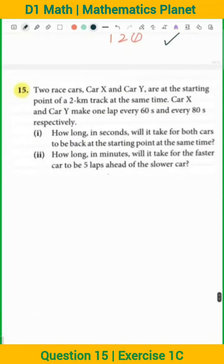Okay, next question will be here. Two race cars, Car X and Car Y, are at the starting point of a 2 km track at the same time. Car X and Car Y make one lap every 60 seconds and every 80 seconds respectively. How long in seconds will it take for both cars to be back at the starting point at the same time?